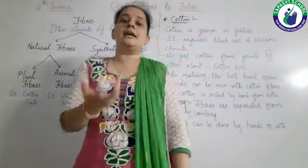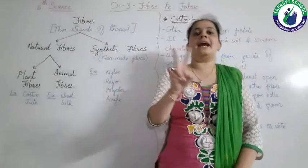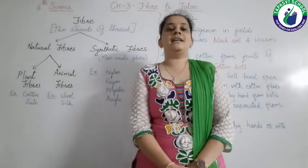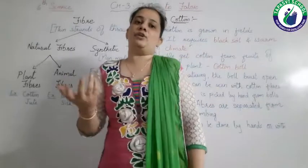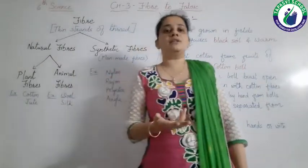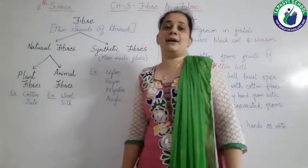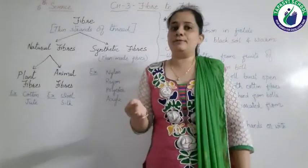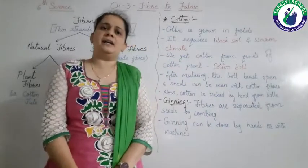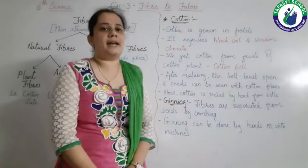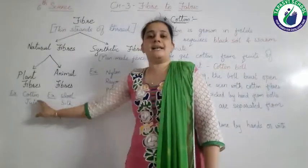Natural fibers are again of two types: plant fibers and animal fibers. From nature, we get fibers either from plants or from animals. The fibers which we get from plants are known as plant fibers. Examples of plant fibers are cotton and jute. Cotton and jute are examples of plant fiber.